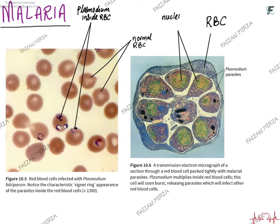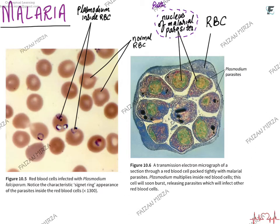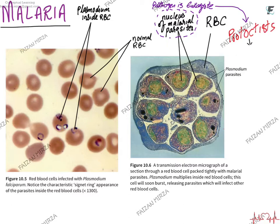In the electron micrograph, you can see the nucleus of the malarial plasmodium very clearly, which tells you that the malarial plasmodium is a eukaryote with eukaryotic features. This is not a bacterial disease — it is a disease caused by a eukaryote, which is a plasmodium, better known as protoctists. Protoctists are unicellular eukaryotes.